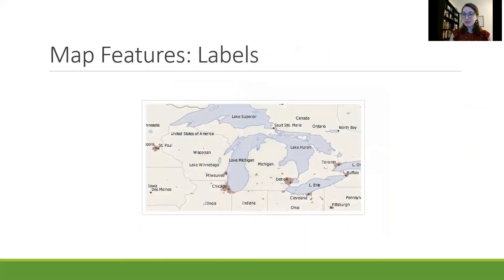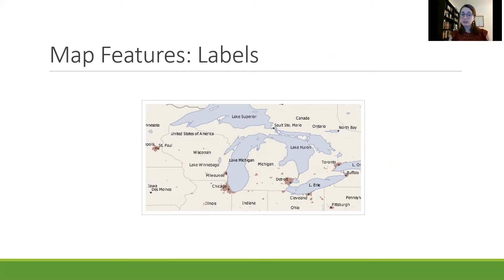You'll also see lots of labels on many maps. On this map we see the labels of all the Great Lakes — Superior, Michigan, Huron, Erie, and Ontario. We also see different states like Illinois, Indiana, and Ohio, and provinces in Canada like Ontario. The bottom half is labeled as the United States of America, the top area is part of Canada, and we also see numerous cities marked on the map.